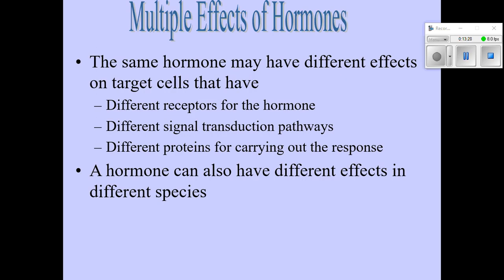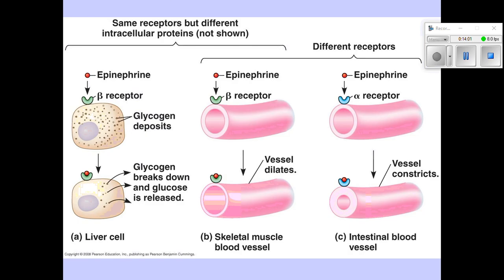Each hormone can in fact have different effects on target cells, because of various different things: there might be different receptors on different cells inside of the cell, what's going on with the signaling pathway — called the signal transduction pathway — might be different in different cells, and there might be different proteins that are turned on in different cells, leading to different responses. Quite often other species, not just mammals, also have the same hormones but they might have different effects than what we see in humans.